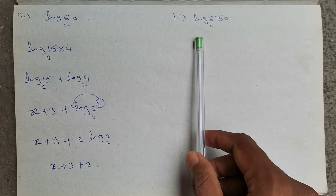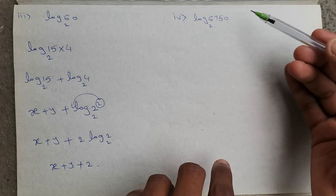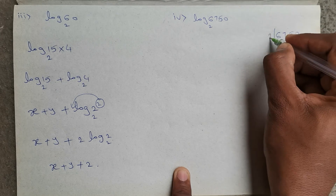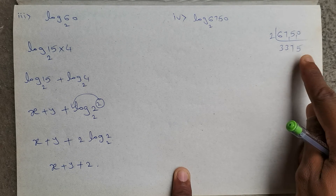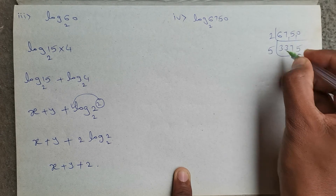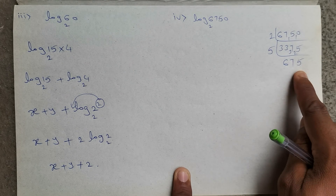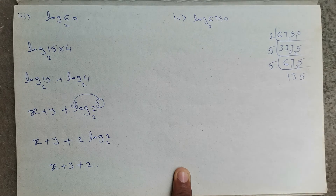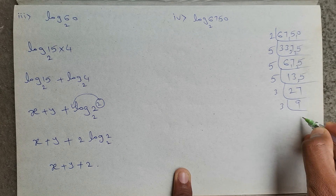Next question, log 6750 base 2. Here a bigger number is there, so I will do prime factorization. Dividing by 2: 6750 ÷ 2 = 3375. Then dividing by 5 repeatedly and by 3: we get 2 × 5³ × 3³. So 6750 equals 2 into 5 power 3 into 3 power 3.